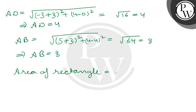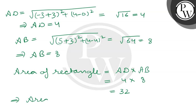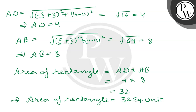The area of the rectangle equals length × breadth, which is AD × AB = 4 × 8 = 32. Therefore, the area of the rectangle is 32 square units. I hope you understood it well. All the best, thank you.